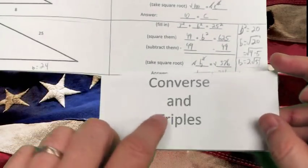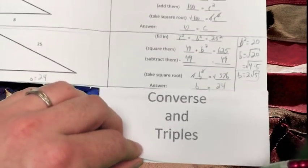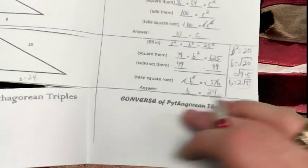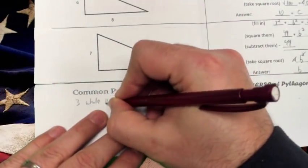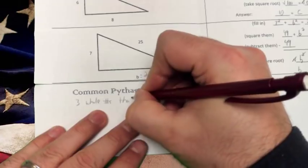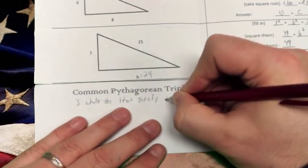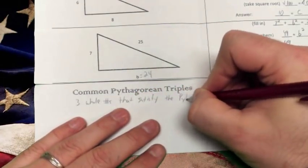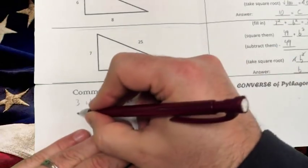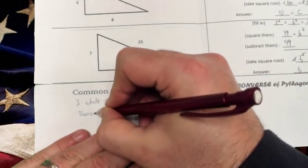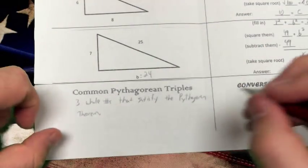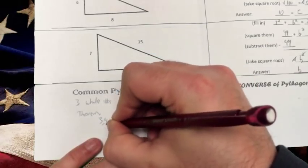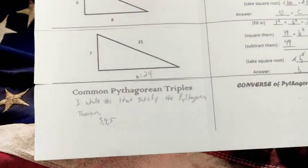Last piece. Pythagorean converse and triples. We're actually going to cover triples first. Pythagorean triples are three whole numbers that satisfy the Pythagorean theorem. Examples of those, very common ones you'll see are 3, 4, 5, and any multiple of that. So we also could have multiple of those by two, and you get 6, 8, 10.